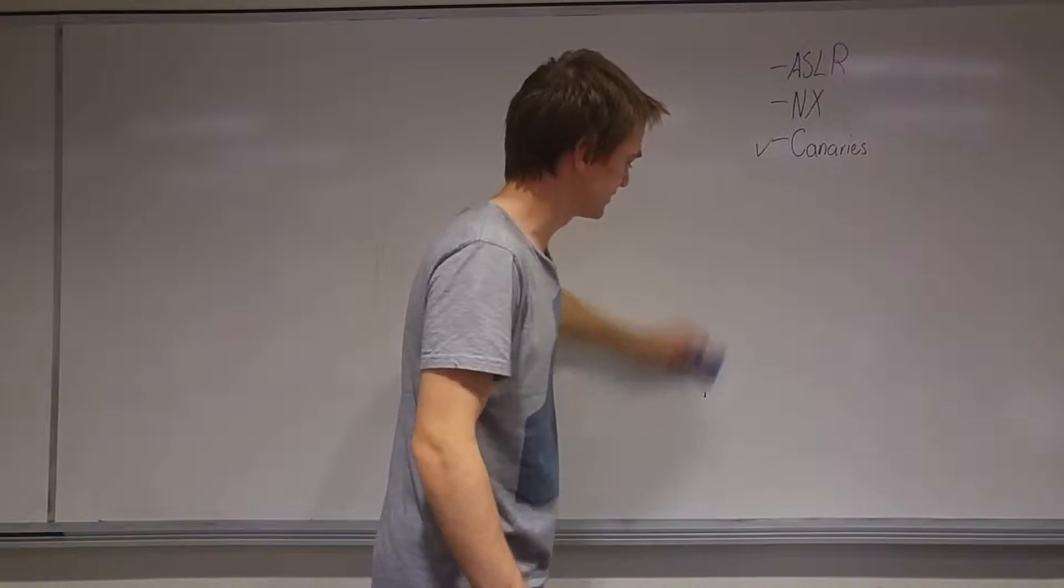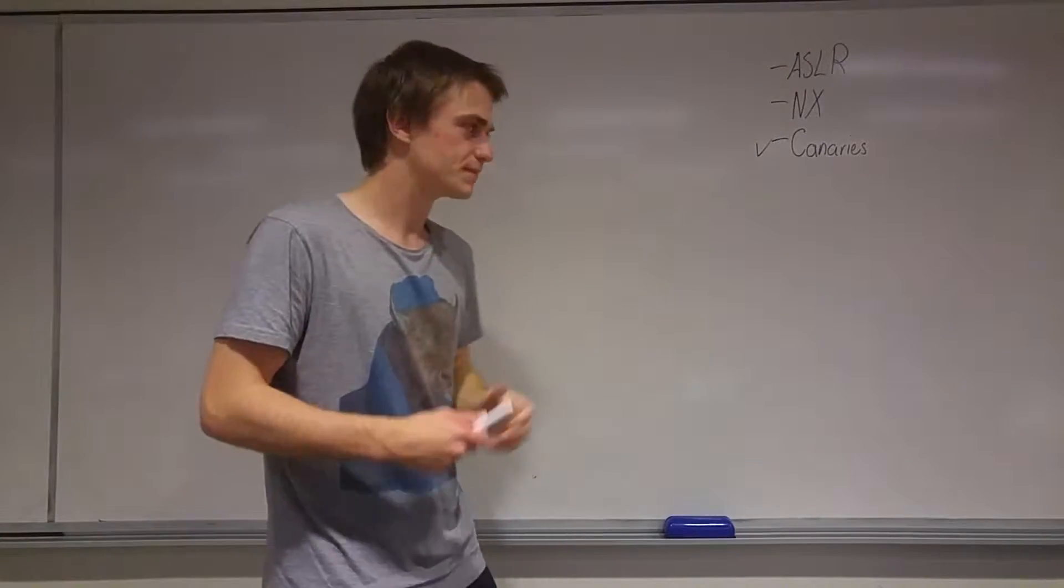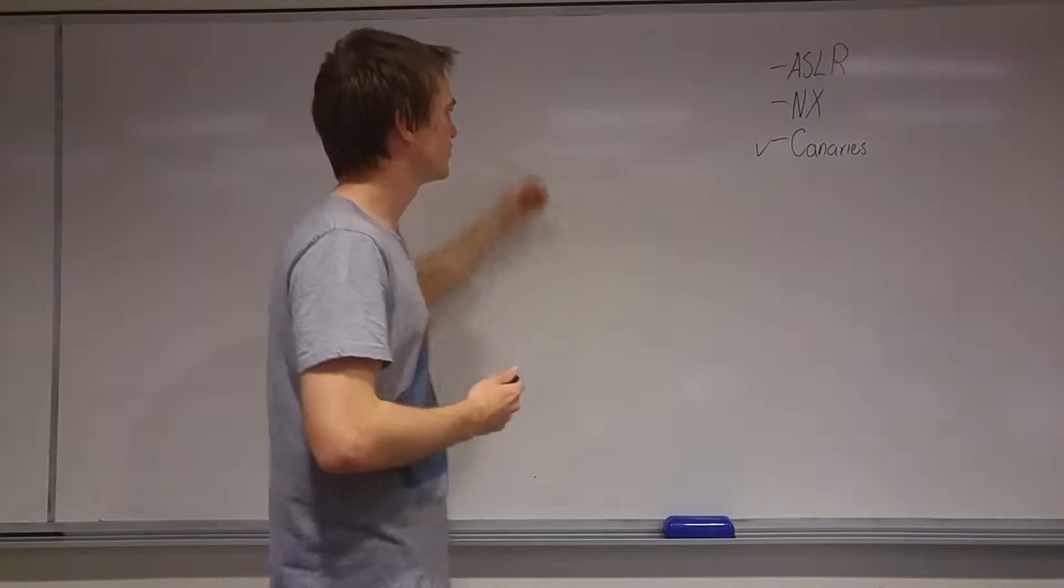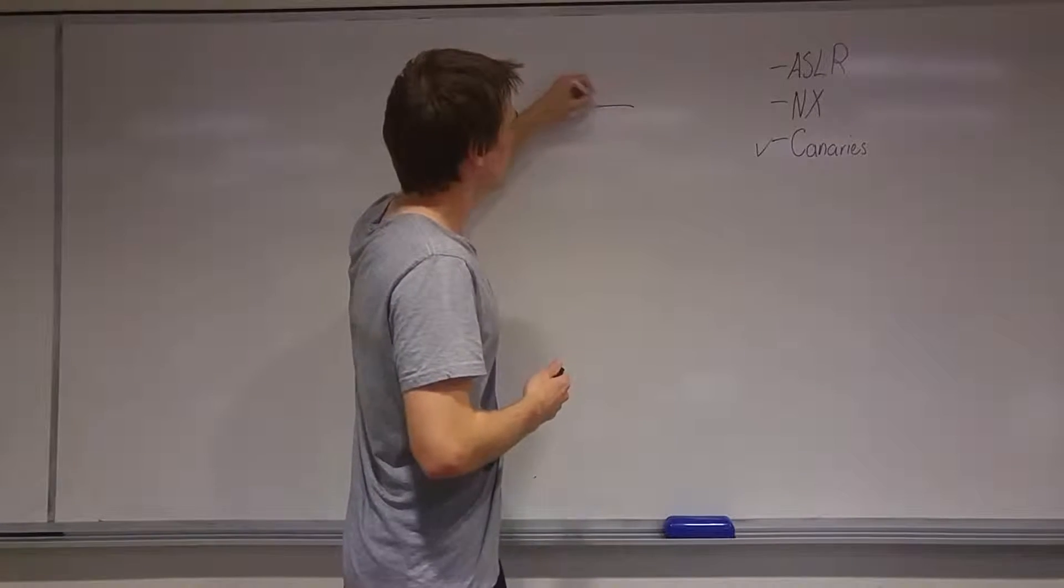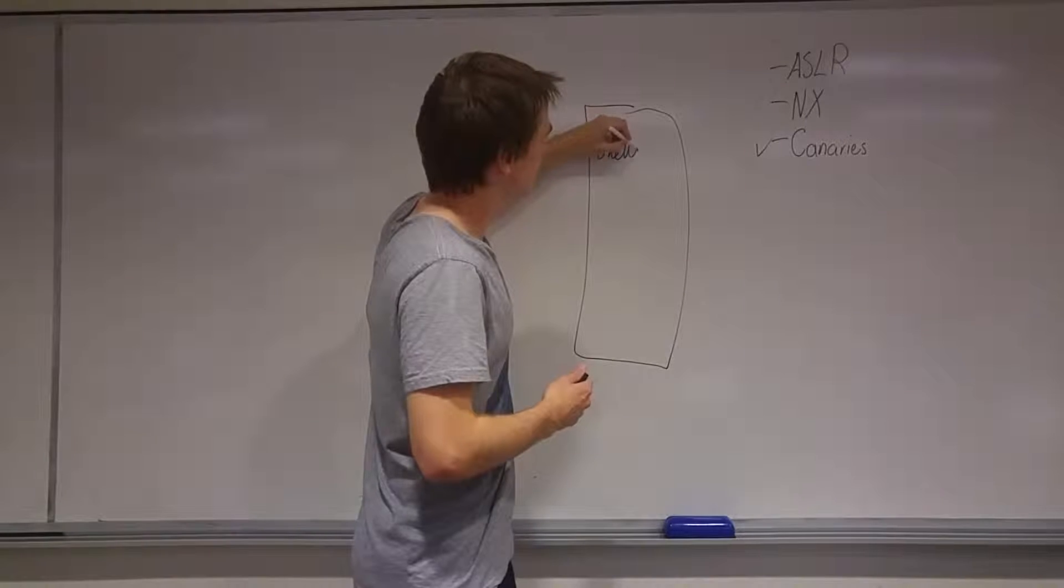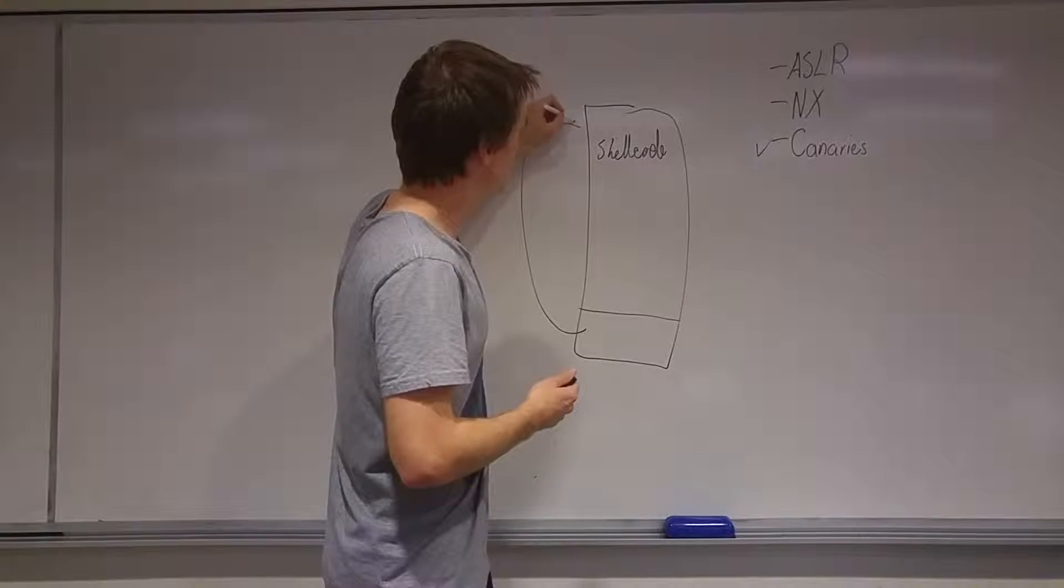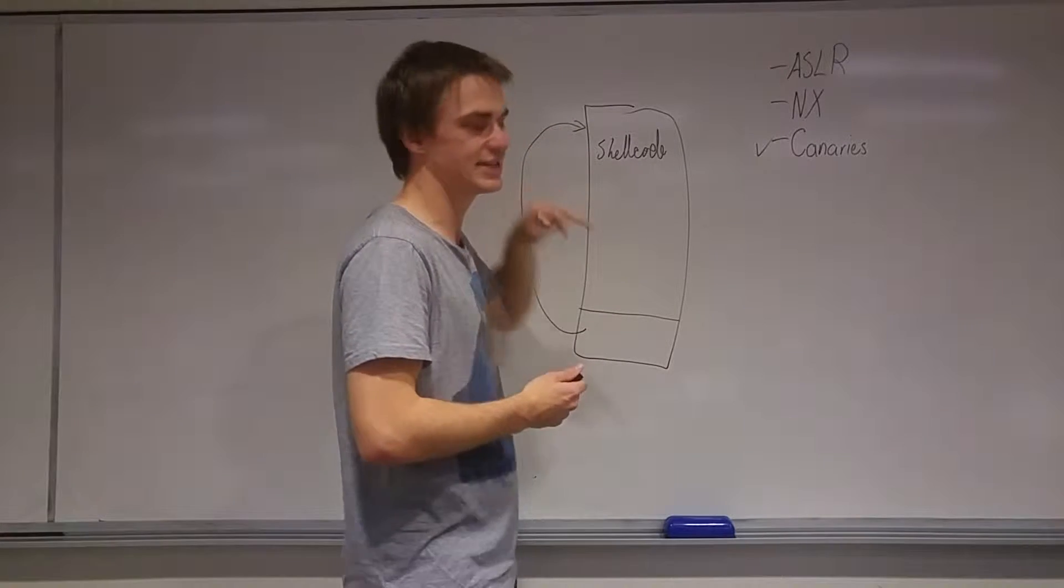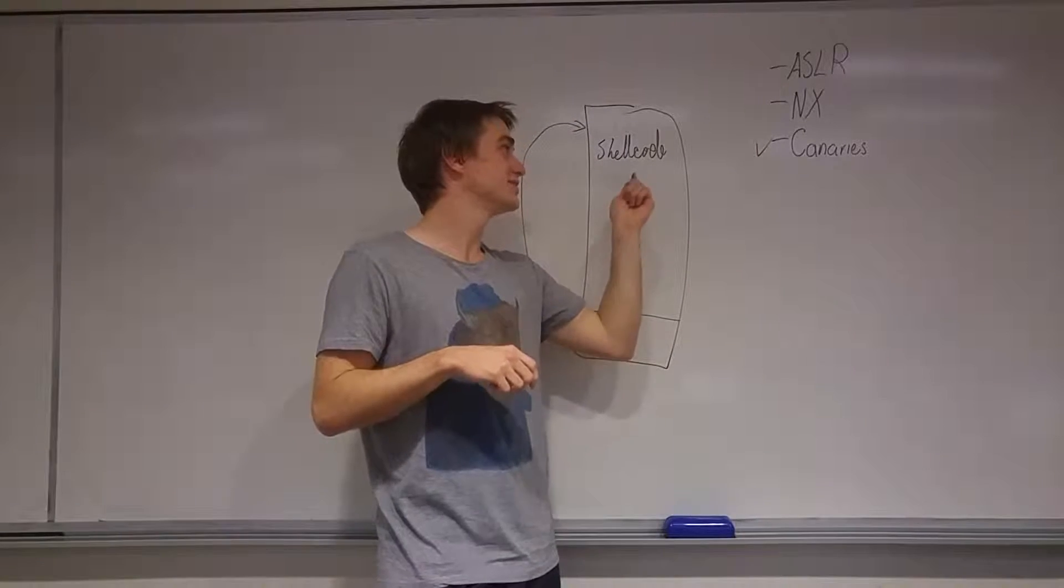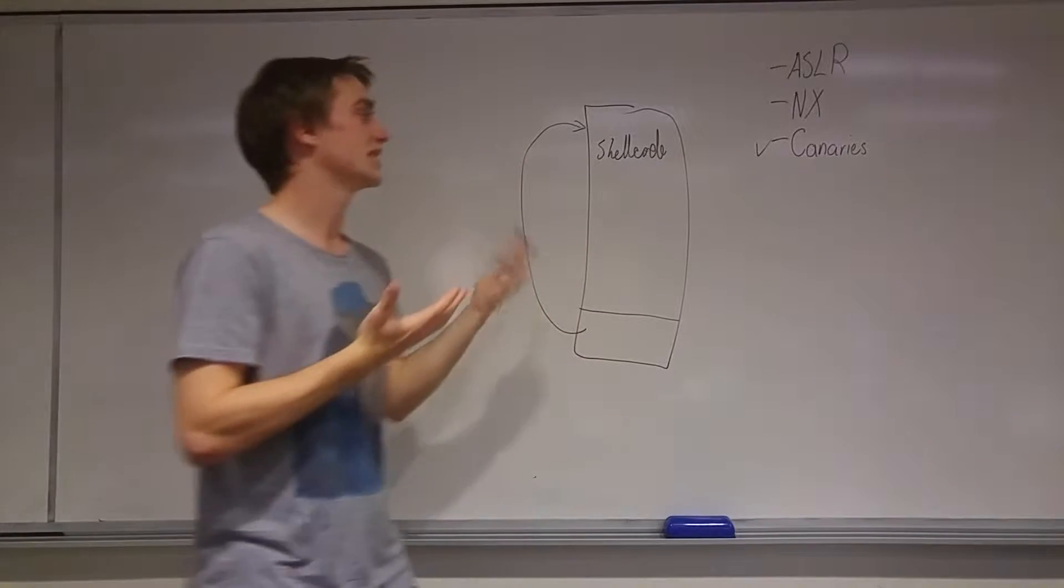So NX is basically being some non-executable stack, right? So if you know a bit about buffer overflow, basically what we do in a buffer overflow is we put our shellcode in the stack, and then we return to our shellcode, which allows us to execute it. They figured out that if they make this non-executable, it makes things a lot harder to actually get around.